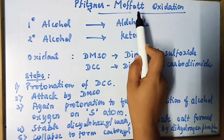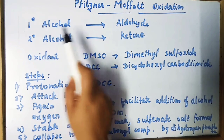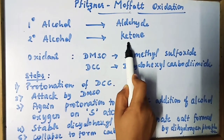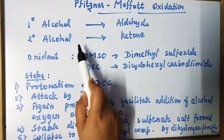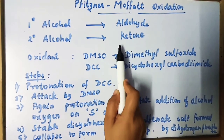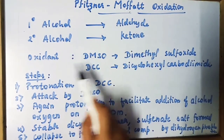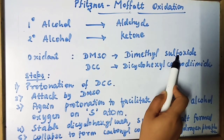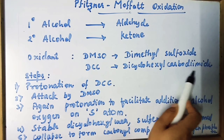The main role of Moffat Oxidation is to convert primary alcohols to aldehyde and secondary alcohols to ketone. There is no effect on tertiary alcohols since these cannot be converted into aldehyde or ketone. The oxidants used in Moffat Oxidation are DMSO and DCC, that is dimethyl sulfoxide and dicyclohexylcarbodiimide.